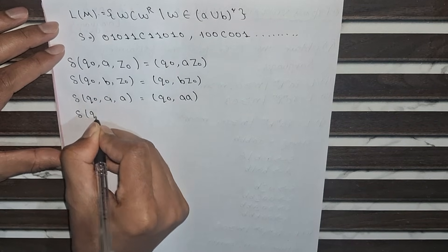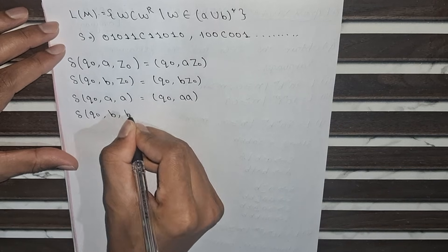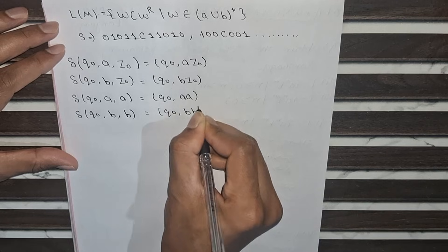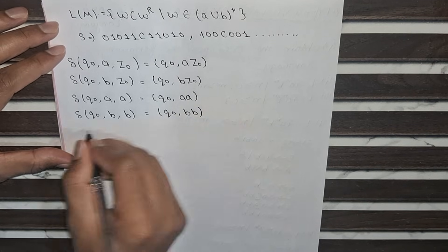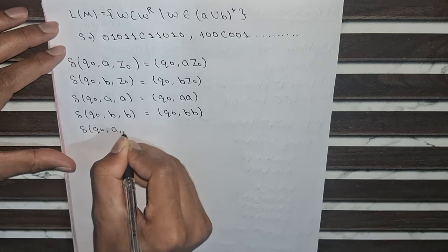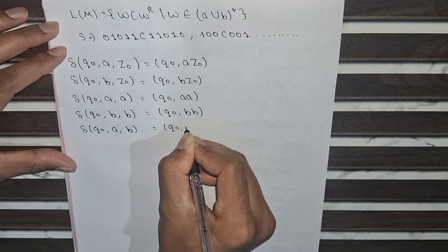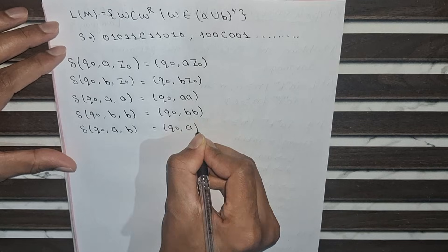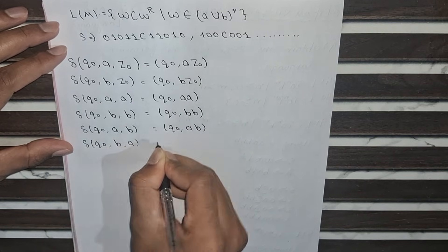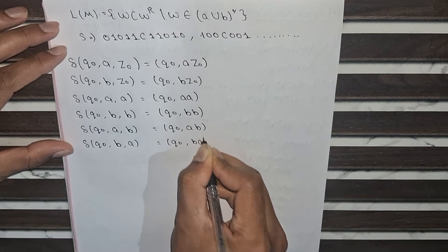For input B with top of stack B, we push B: δ(Q0, B, B) = (Q0, BB). If the top of the stack is A and input is B, we push B on top of A: δ(Q0, B, A) = (Q0, BA). And if the top of the stack is B and input is A, we push A on top of B: δ(Q0, A, B) = (Q0, AB).